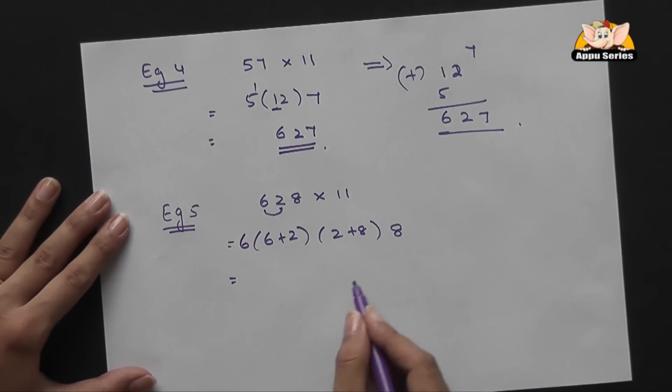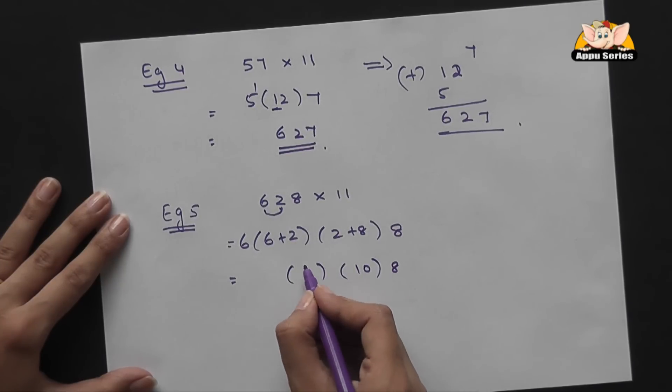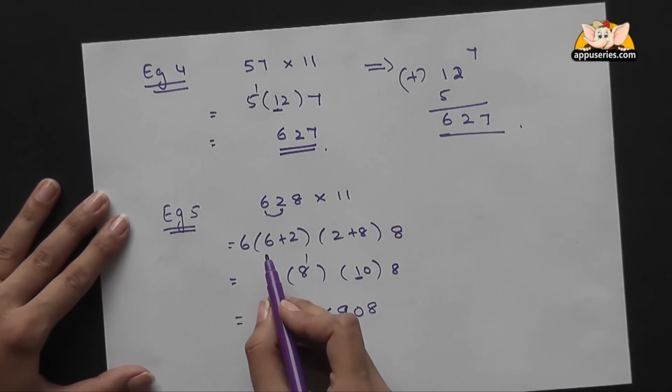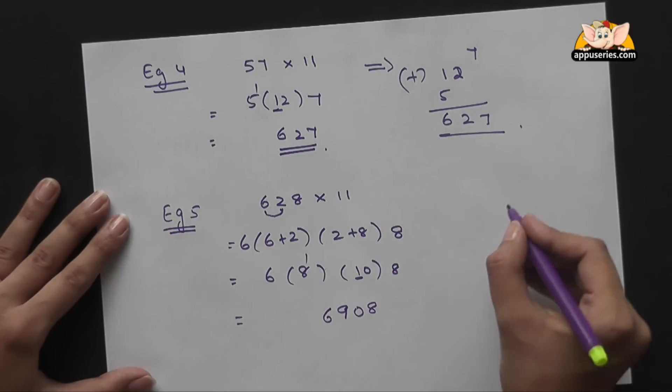So it's 8, then 10, 8, and 6. So you get 8, 0, this 1 gets carried over here so this becomes 9, and you bring down the 6. If you find this calculation difficult, you can write it down this way: start with 8, 8 plus 2 is 10, 6 plus 2 is 8.